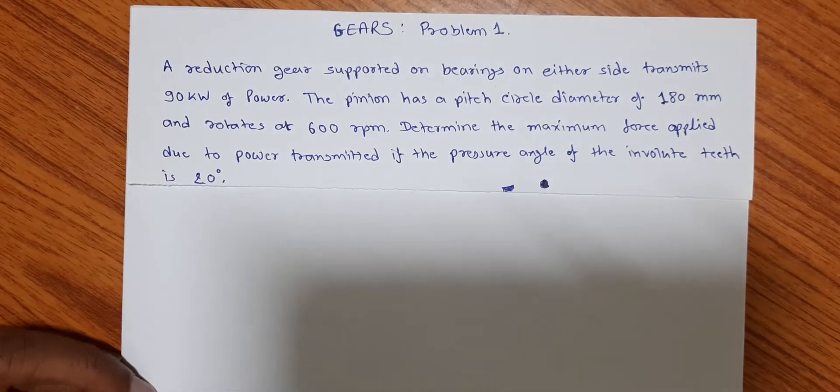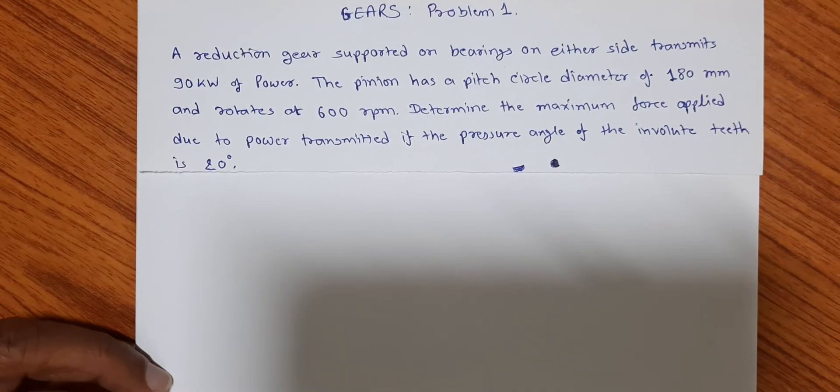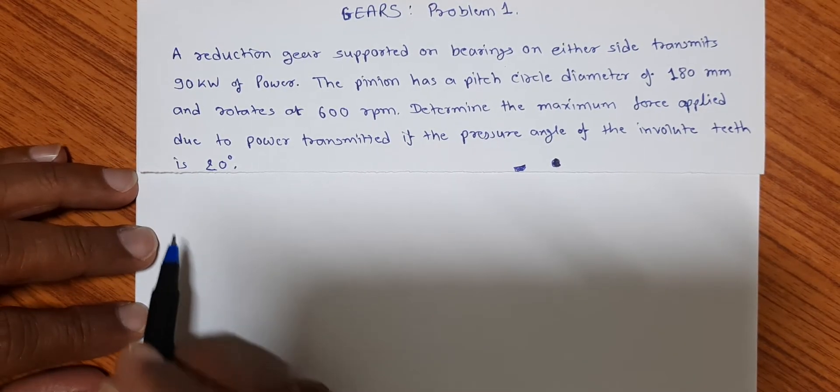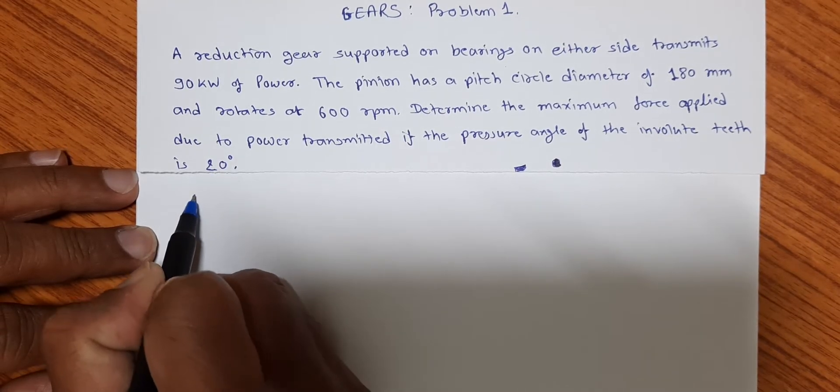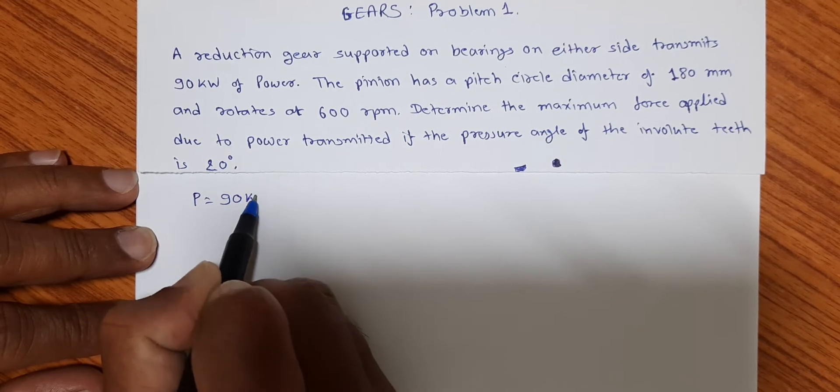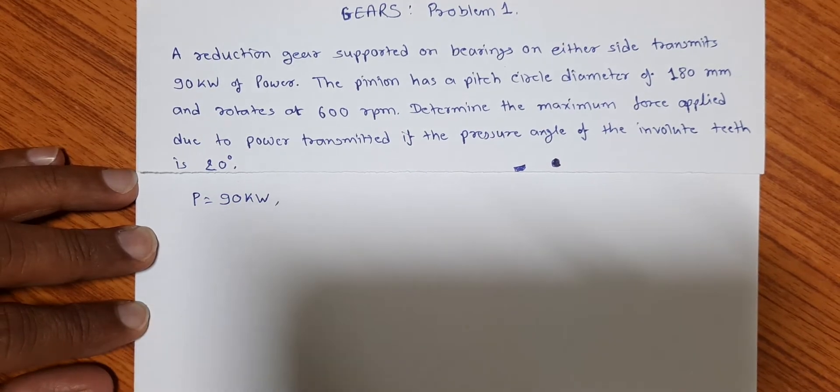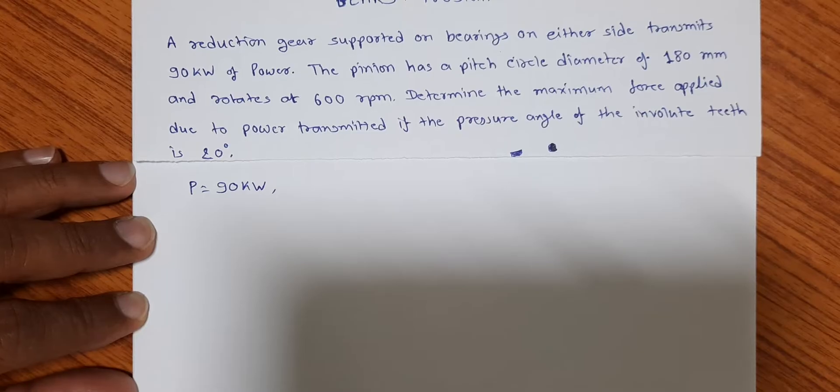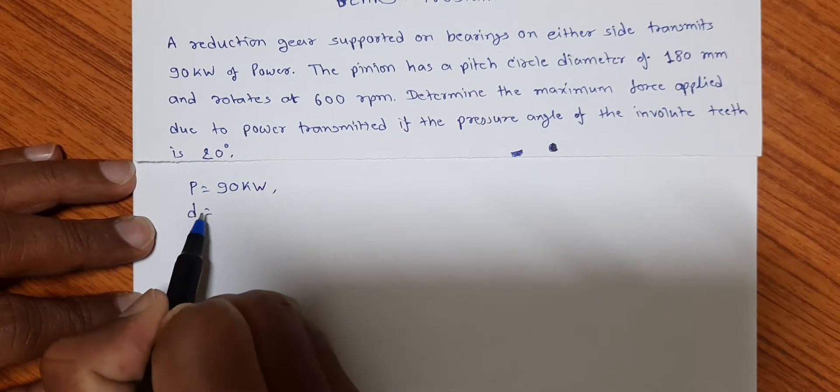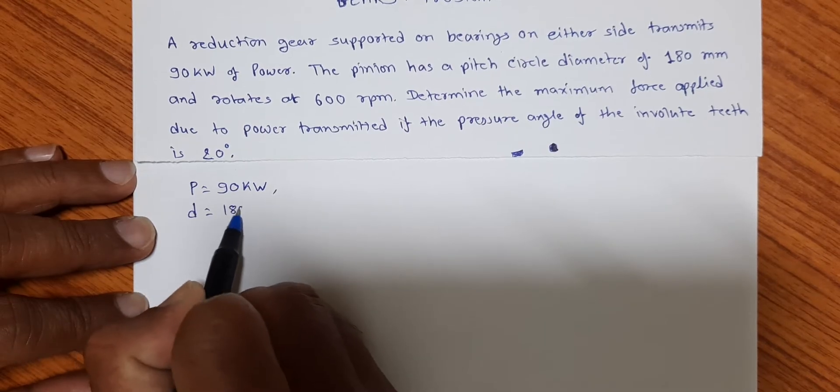Dear friends, let us first of all note down the given data. Here the power transmitted by reduction gear is given: P is equal to 90 kilowatts. And the pitch circle diameter of the pinion is given: d is equal to 180 millimeters, that is equal to 0.180 meters.